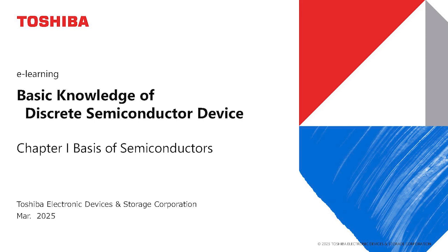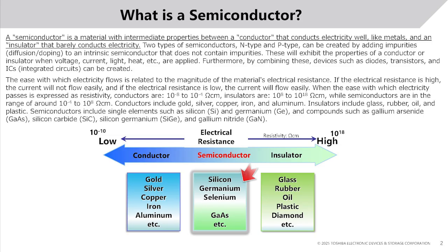Chapter 1: Basis of Semiconductors. Chapter 1 discusses the basics of semiconductors, such as the definition of semiconductor materials, n-type and p-type semiconductors, and p-n junctions. What is a semiconductor? A semiconductor is a material with intermediate properties between a conductor and an insulator.